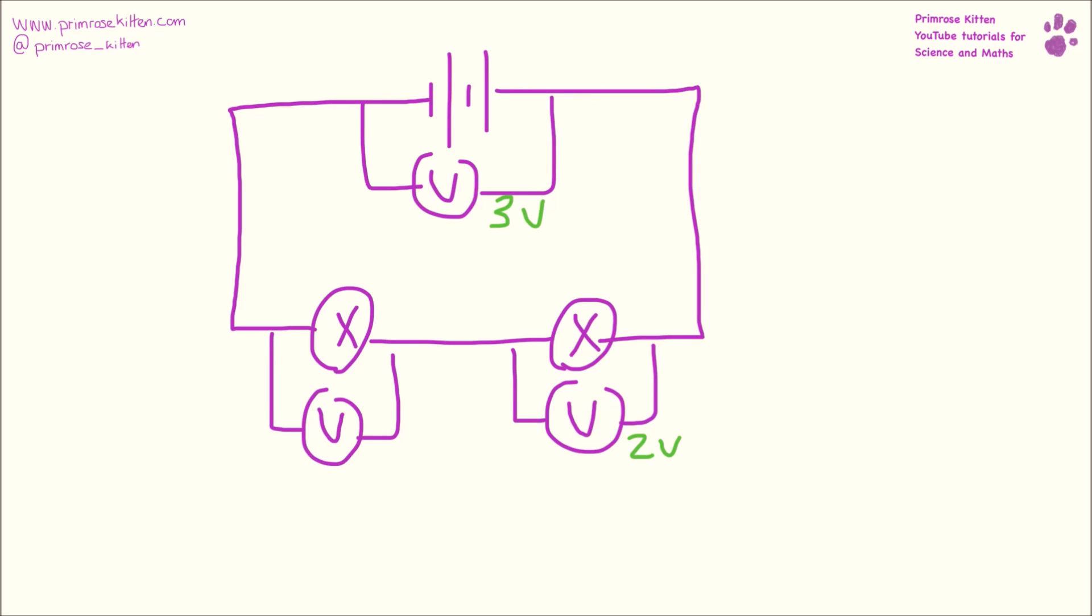Here we have a battery which has a potential difference of three volts across it. We have a bulb that has a potential difference of two volts across it. Now we know that this one and this one must add together to make this one up here, which means this bulb down here must have a potential difference of one volt across it.